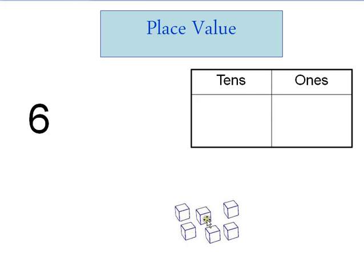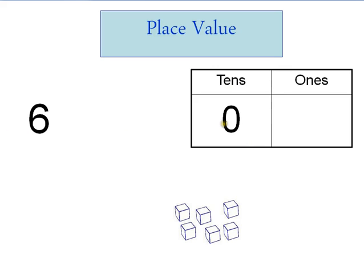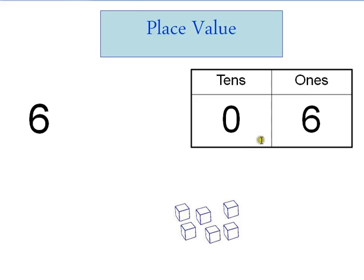See these six little one cubes? One, two, three, four, five, six. We don't have any groups of ten over here — zero — and we have six ones. Because this has one digit, that means it's in the ones place.